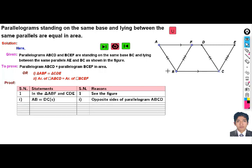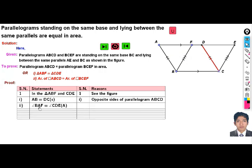Statement number one: AB equals CD. Reason is opposite sides of parallelogram ABCD. Look at here according to this visual form, AB and CD are equal.